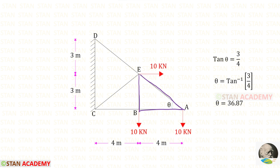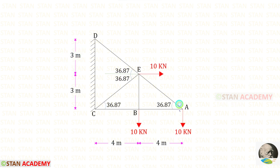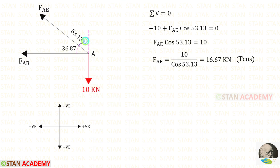In this triangle, let us use the tan theta formula. We know that tan theta is opposite side by adjacent side, so 3 upon 4. For theta we will get 36.87°. This angle and this angle will both be 36.87° because of the similar dimensions. First let us take joint A, and we can easily find this angle: 90 minus 36.87 = 53.13°.